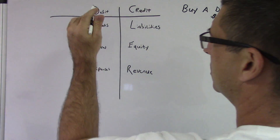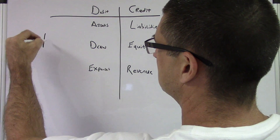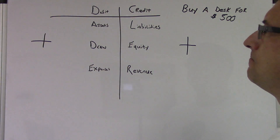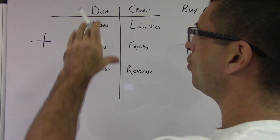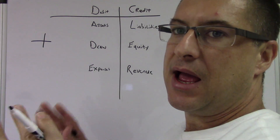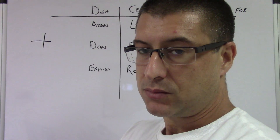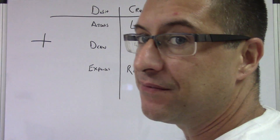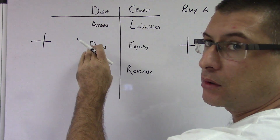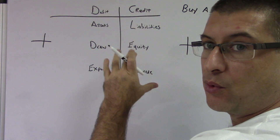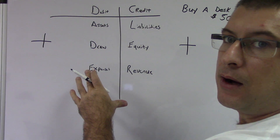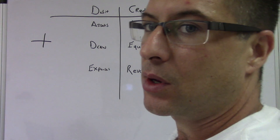These are the positive sides. Debits and credits have to equal, so you're going to have at least one debit — maybe more — and at least one credit — maybe more — and they're always going to equal.